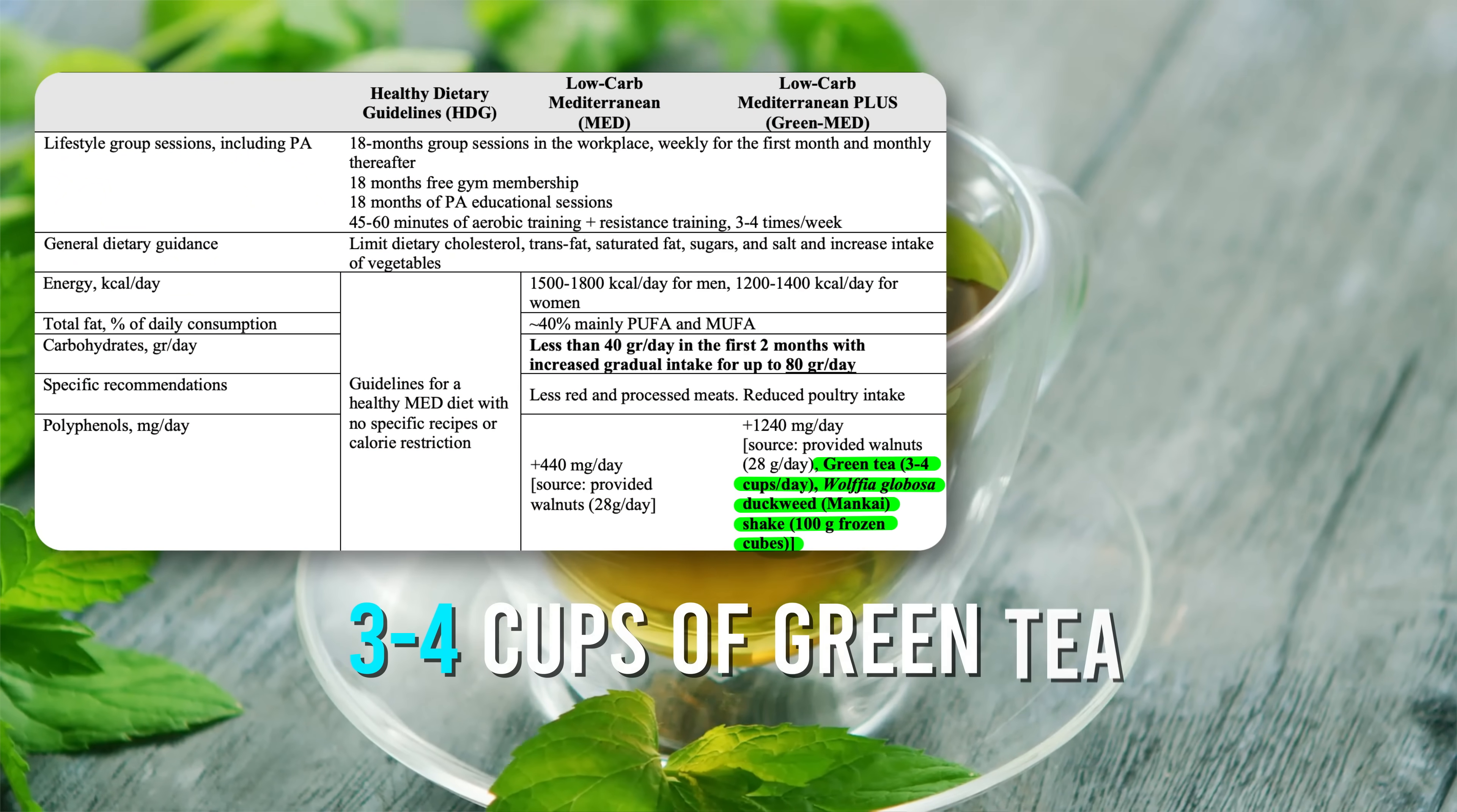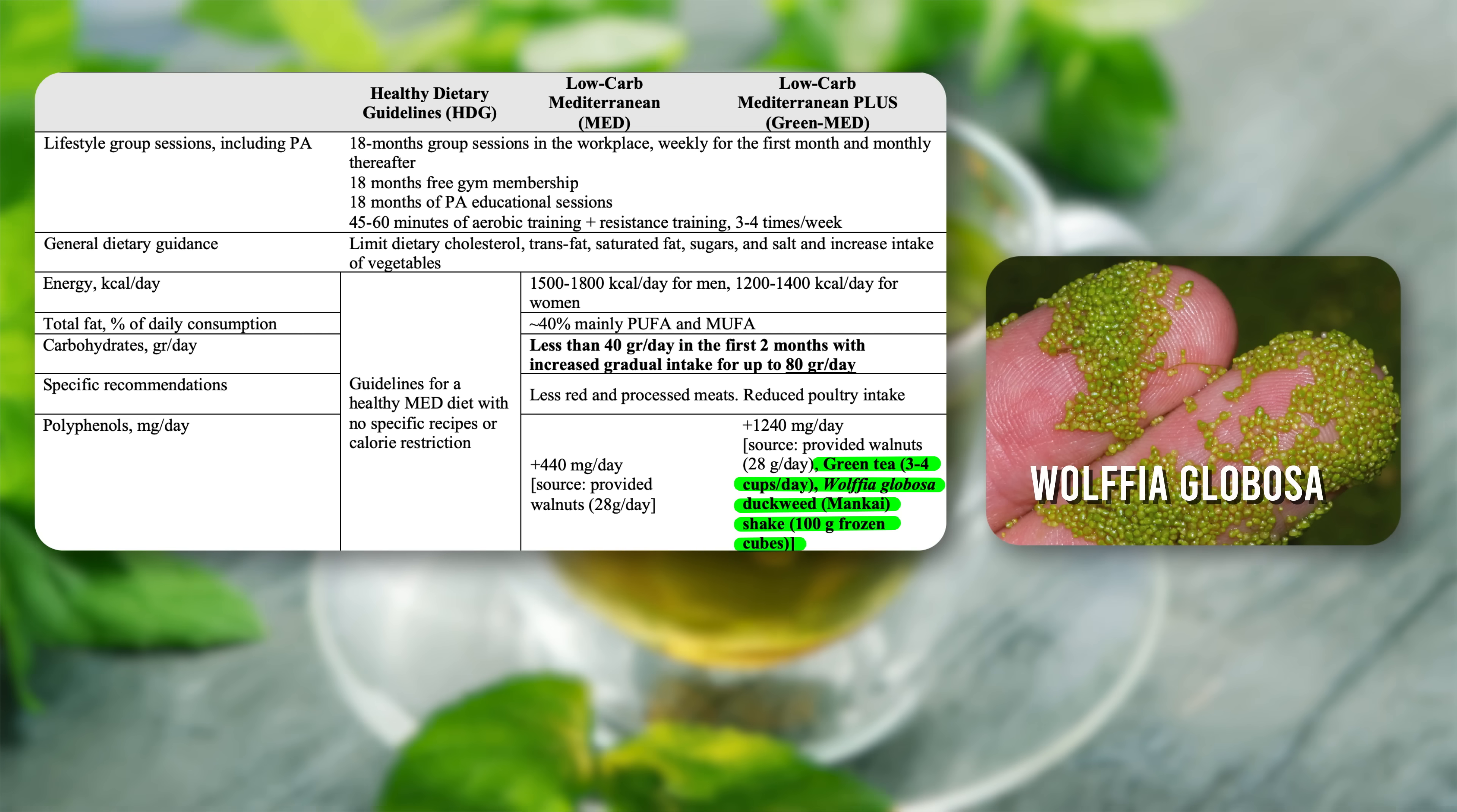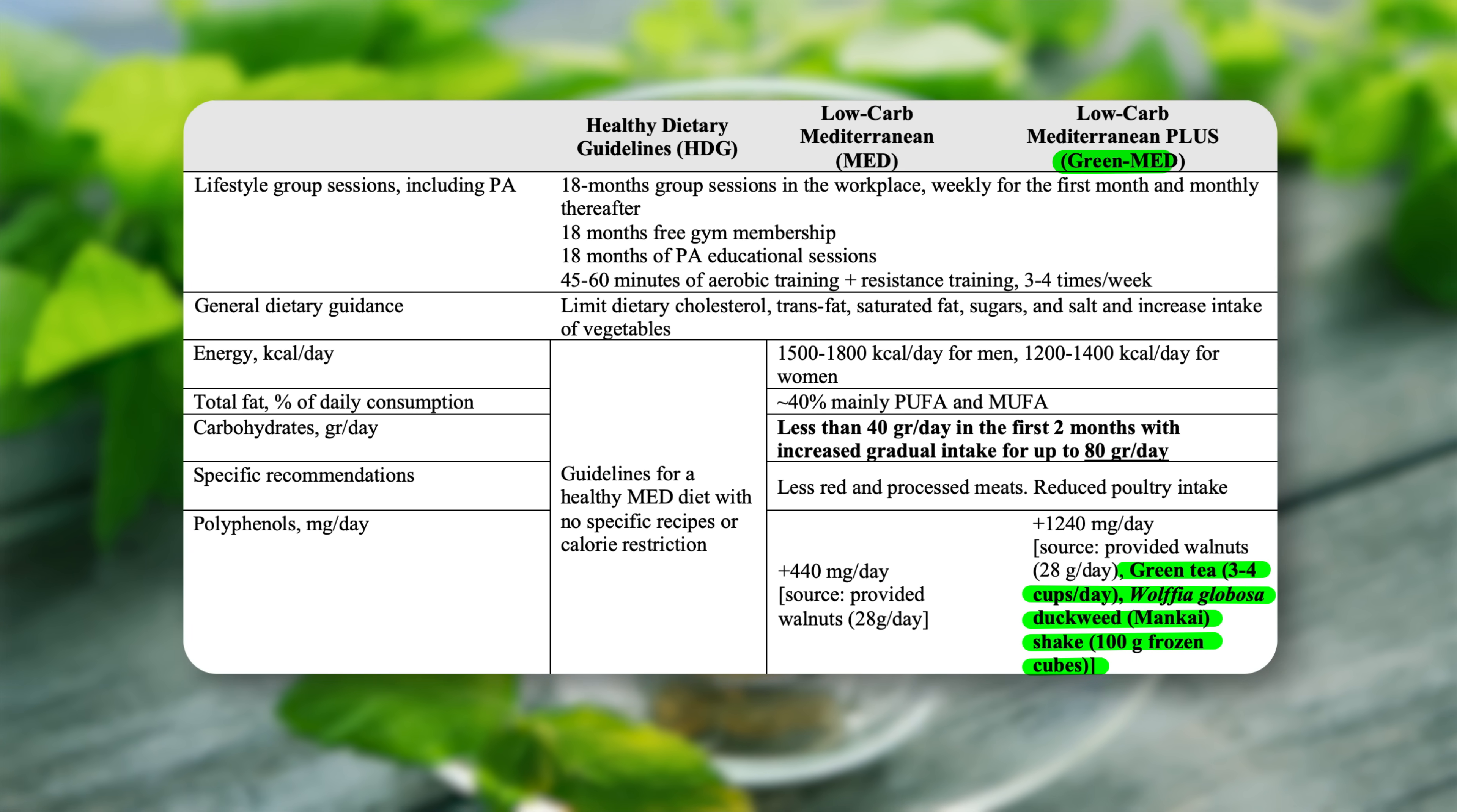Both were geared towards more unsaturated fat and included one ounce of walnuts per day. But one of the low-carb Mediterranean diets was differentiated from the other by the addition of three to four cups of green tea per day, plus supplementation with something called Wolfia globosa duckweed, also called Mankai. This particular low-carb diet with the green tea and the duckweed was called the green med diet.